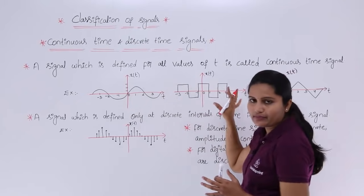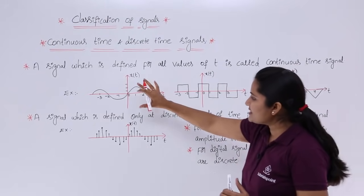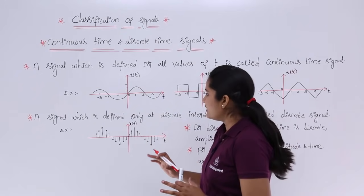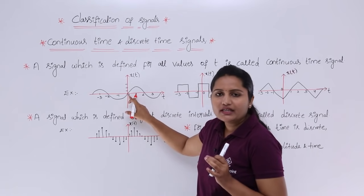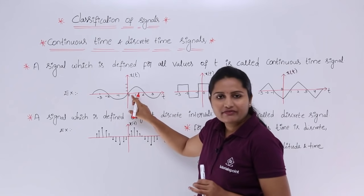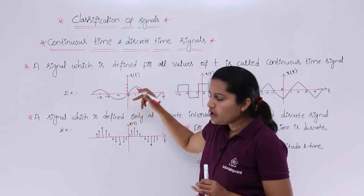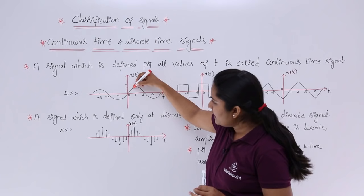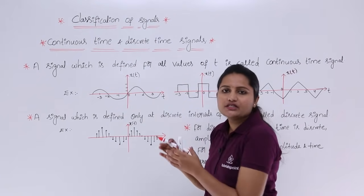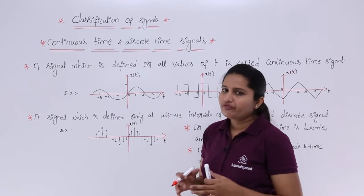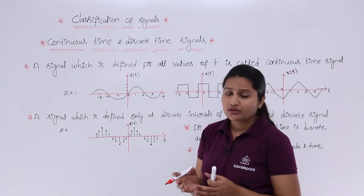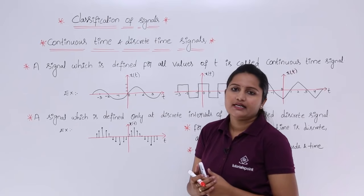Here are example waveforms of both continuous and discrete time signals. Consider this signal — this is a sine wave. If you want the value at 0.1 or 0.2, by taking the reference line and mapping with the voltage axis, you can determine what the signal value is at any particular instant of time.